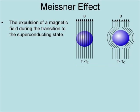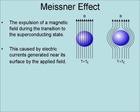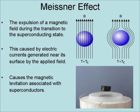The Meissner effect is the expulsion of a magnetic field from a superconductor during the transition to the superconducting state. It is caused by an electric current generated near the superconductor's surface by the applied field. The magnetic field of these currents cancels out the applied field within the superconductor, which causes the magnetic levitation associated with superconductors.